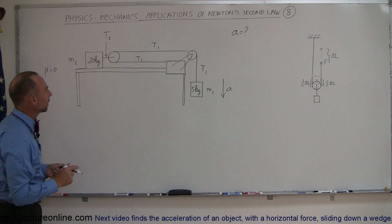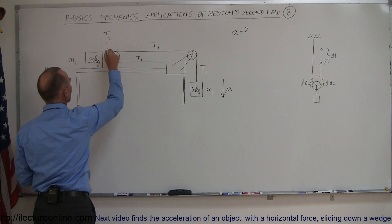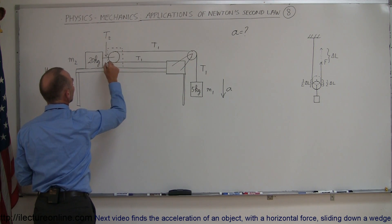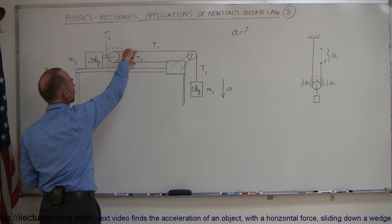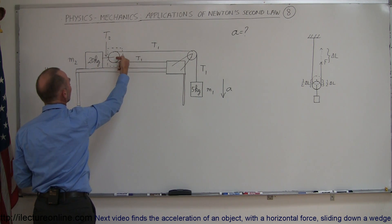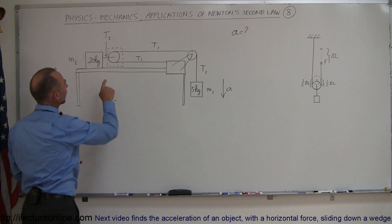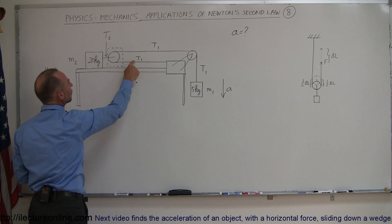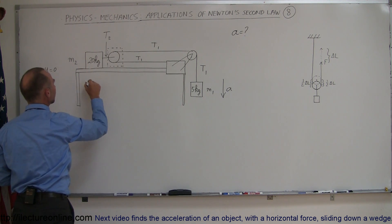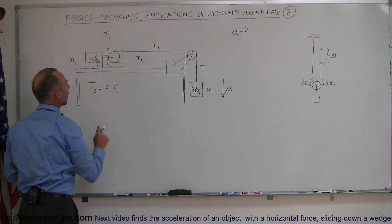How do we know that? Let's draw a free body diagram of this pulley. We notice that these two tensions will be pulling to the right and this tension will be pulling to the left, which means that this tension must equal both of these tensions added together. So we can say that T2 is equal to two times T1.